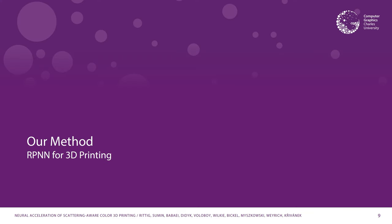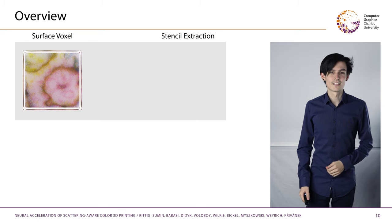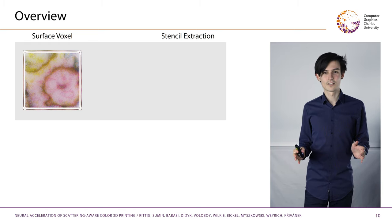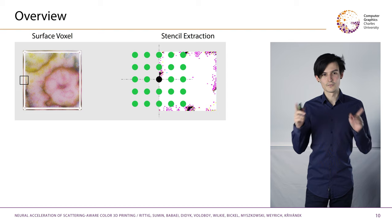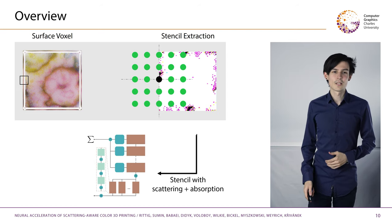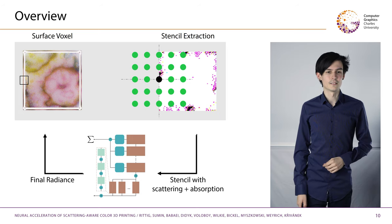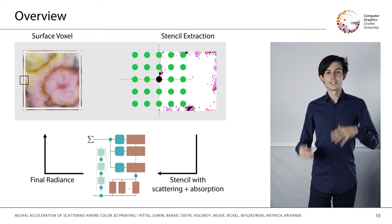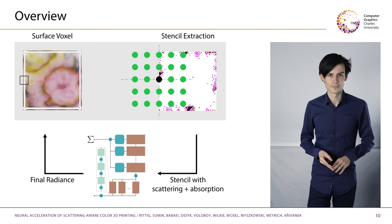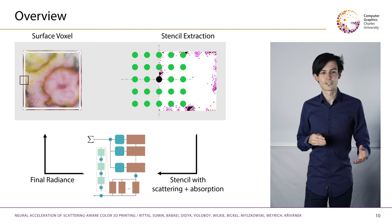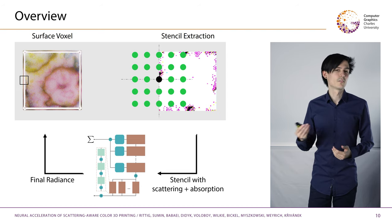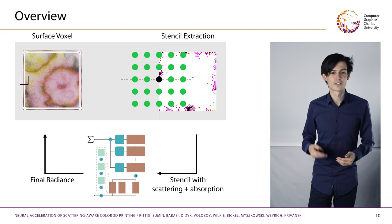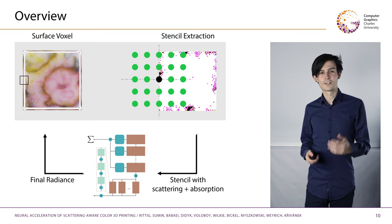I will now talk about our contributions to RPNNs and how we use them differently for 3D printing volumes. In our setting, instead of shooting rays, we predict the final appearance of the surface completely with the network. For each surface voxel, we extract a stencil describing the surrounding volume, then run them in parallel batches through the network, yielding a single radiance value. We reassemble these values into a 3D grid to map the appearance back to the surface voxel. This loop is independent for different color channels, but they all use the same network. The prediction pipeline is the same during inference and training, except that during training the stencils come from many training examples.